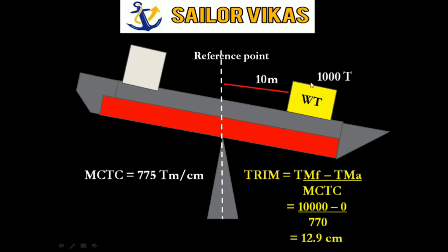So this weight of 1000 tons has created a trimming moment of 10,000 ton-meter, which has caused the vessel to trim by 12.9 centimeters. MCTC plays a very important role — by referring to it in the table, we can easily identify how much the vessel is going to trim with respect to the weight loaded. This is all about MCTC.